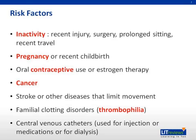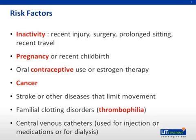Predisposing risk factors for thrombophlebitis and venous thromboembolism are similar and include varicose veins, immobilization, trauma, postoperative states, pregnancy, the period immediately following childbirth, active malignancies, autoimmune diseases, use of oral contraceptives and hormonal replacement, advanced age, obesity, and history of previous DVT. Inherited thrombophilias are also commonly causes of thrombophlebitis.